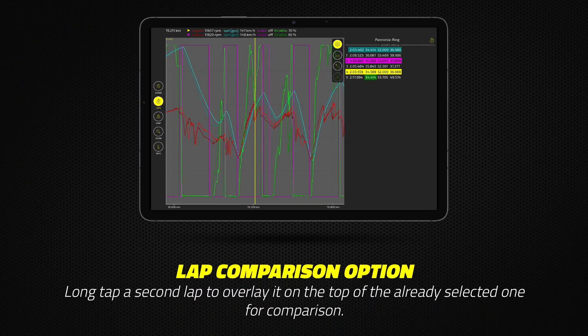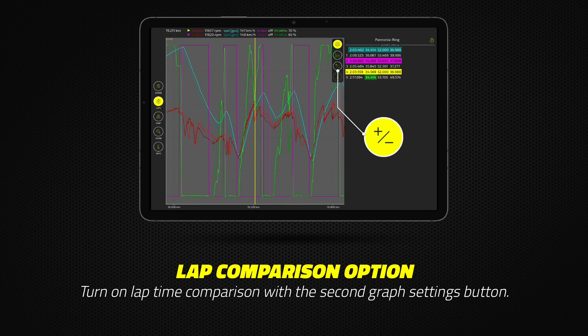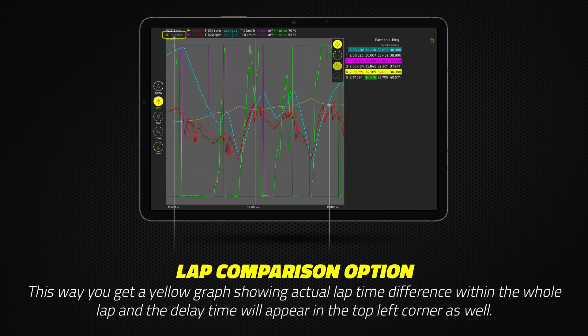You have the option to compare two laps. First, select a lap by tapping it, then long tap on the other lap you wish to compare it with. Before doing so, set the horizontal axis to distance first. By tapping the second graph settings button, you can recall the lap comparison mode. This way you get a yellow graph showing the actual lap time difference within the whole lap, and the delay time will appear in the top left corner as well.